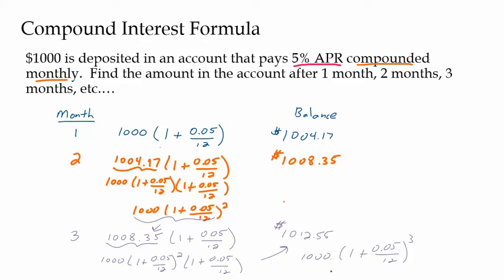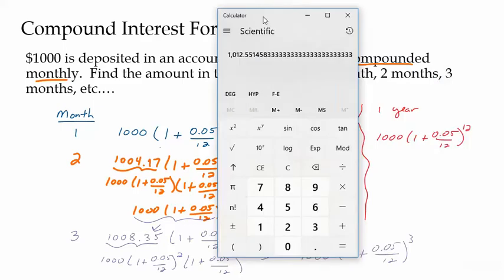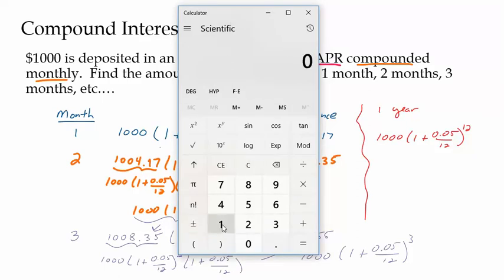So now let's say I want to figure out how much is in the account after a year. Instead of going through month four, five, six, seven — let's cut to a year. After one year, we're doing this twelve times: we take $1,000 and multiply by (1 + 0.05/12) twelve times. For two years we'd do it twenty-four times; for three years, thirty-six times. So I can figure out how much I have in my account after a year without calculating every single month. Doing that calculation gives us $1,051.16.